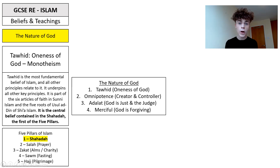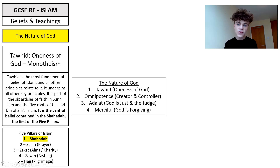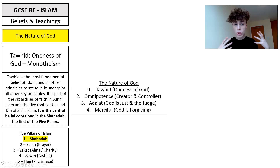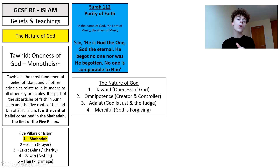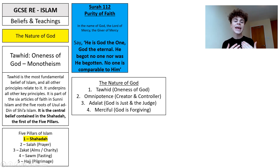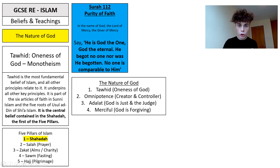Muslims believe the oneness of God — Tawhid — is the key teaching of their religion. We also need to know about omnipotence: God is all-powerful, the creator and controller. God is just and will judge people fairly, linking to the idea of judgment day and life after death. And God is merciful — forgiving. Our key source of scriptural evidence for this is Surah 112: 'He is God the one, God the eternal. He begot no one, nor was he begotten. No one is comparable to him.'